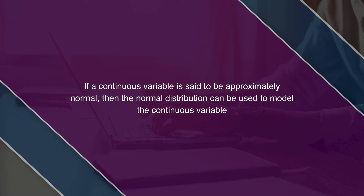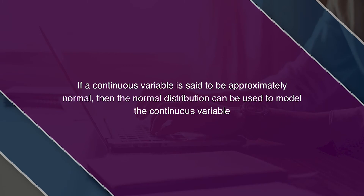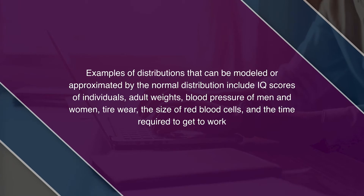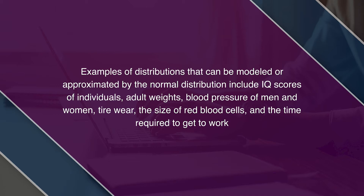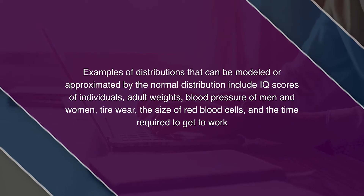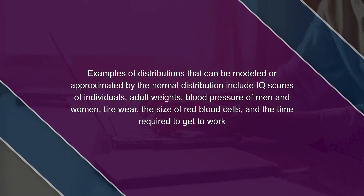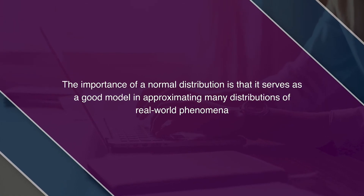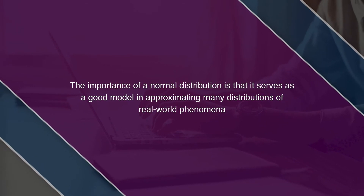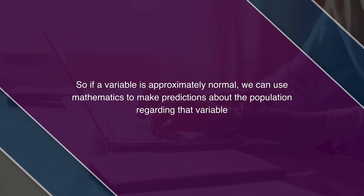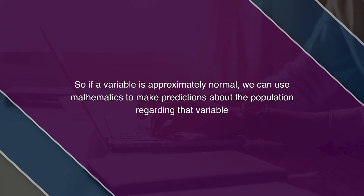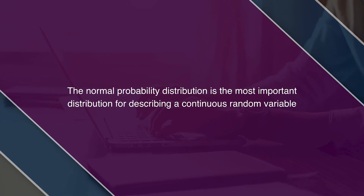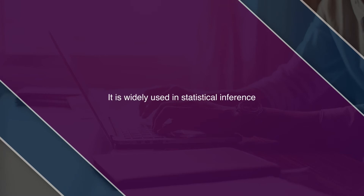The first type of continuous probability distribution is the normal probability distribution, which represents the value of a continuous variable. If a continuous variable is approximately normal, the normal distribution can be used to model it. Examples that can be modeled by normal distribution include IQ scores, adult weights, blood pressure of men and women, tire wear, size of red blood cells, and time required to get to work. The normal distribution serves as a good model in approximating many distributions of real-world phenomena.